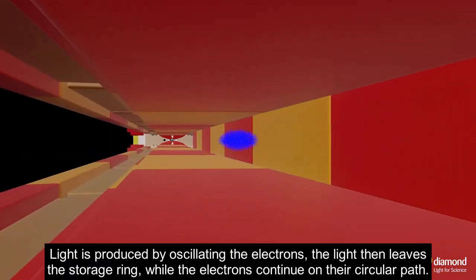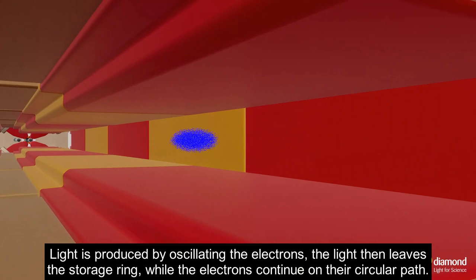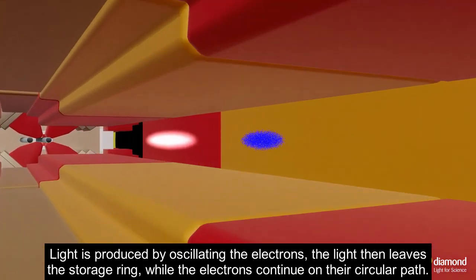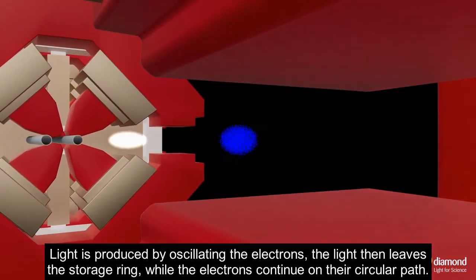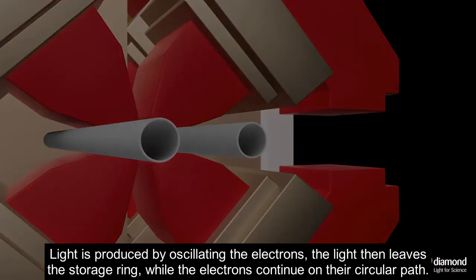Light is produced by oscillating the electrons. The light then leaves the storage ring while the electrons continue on their circular path.